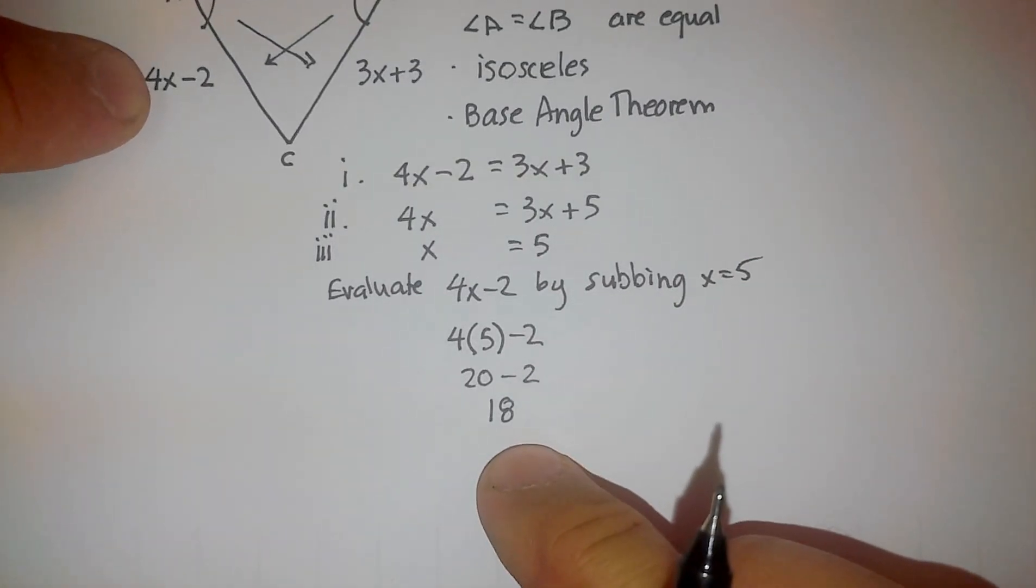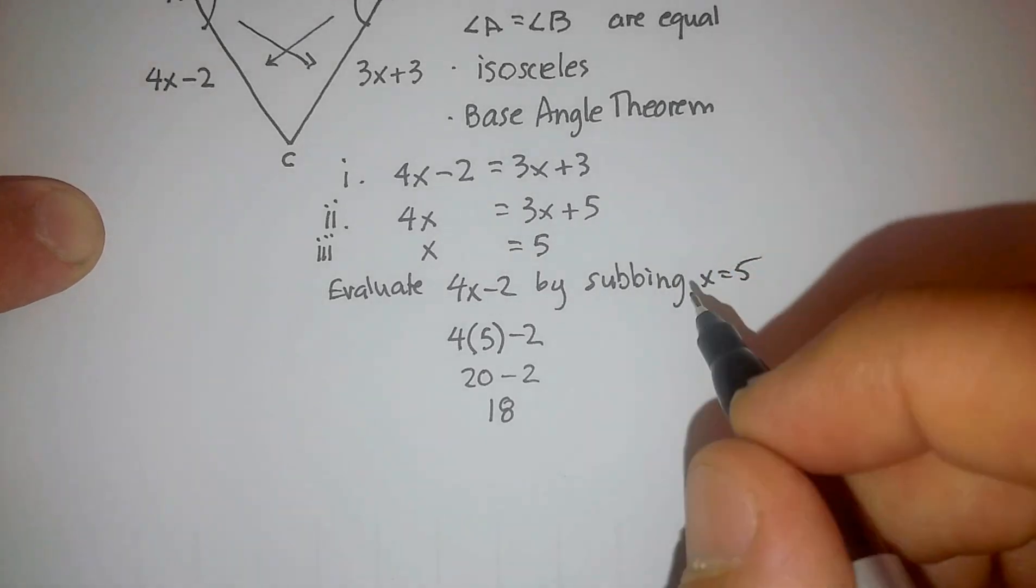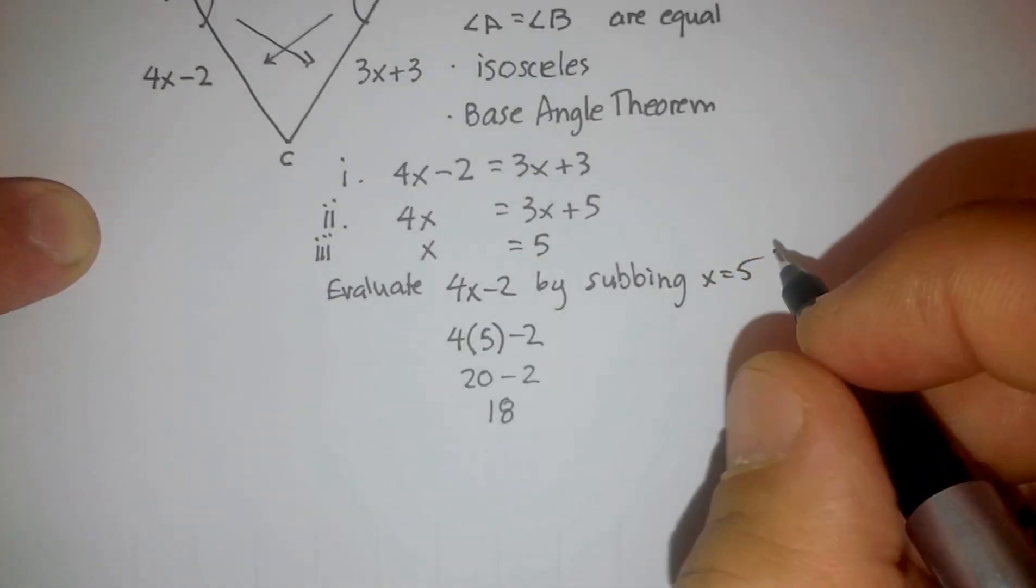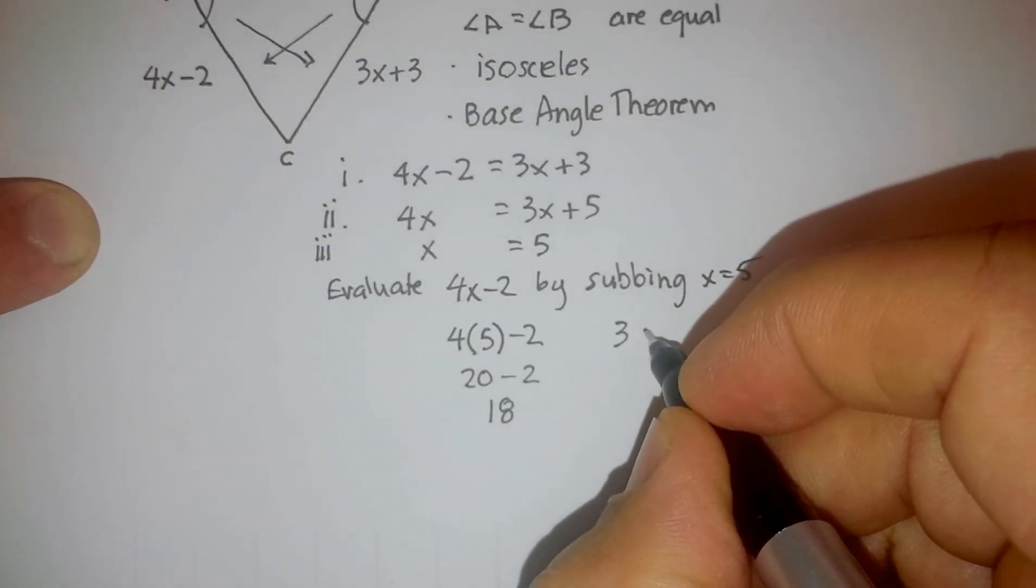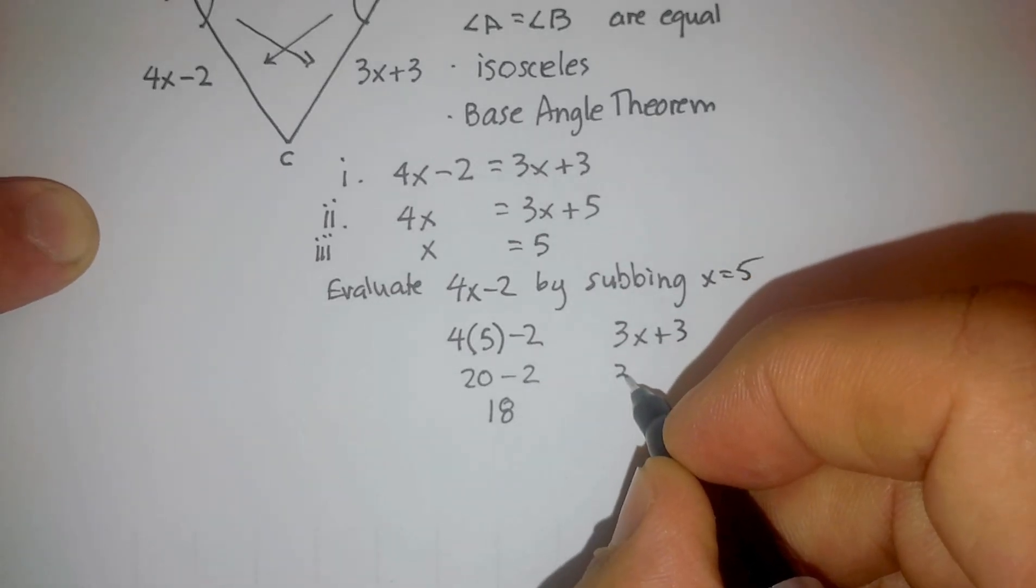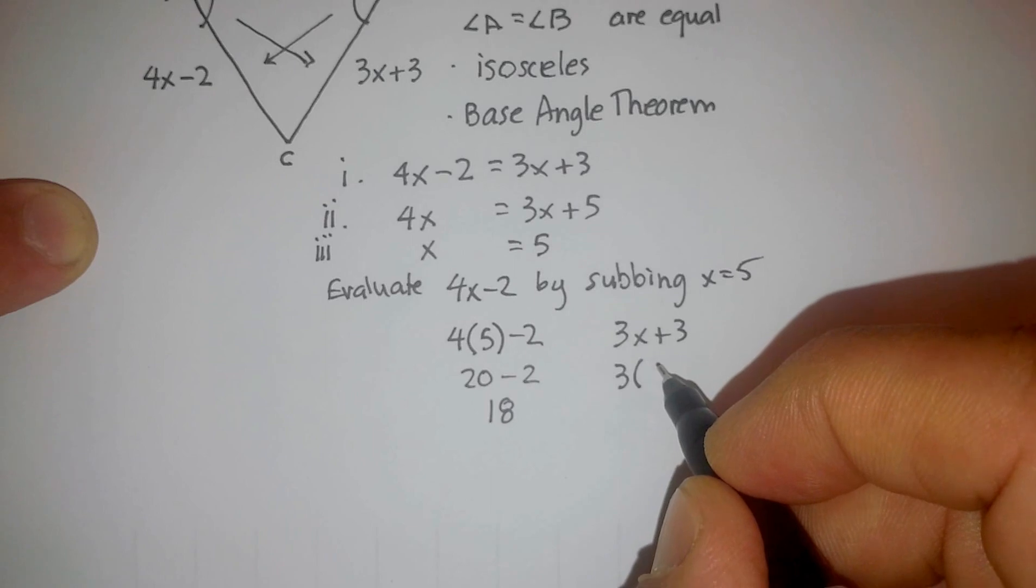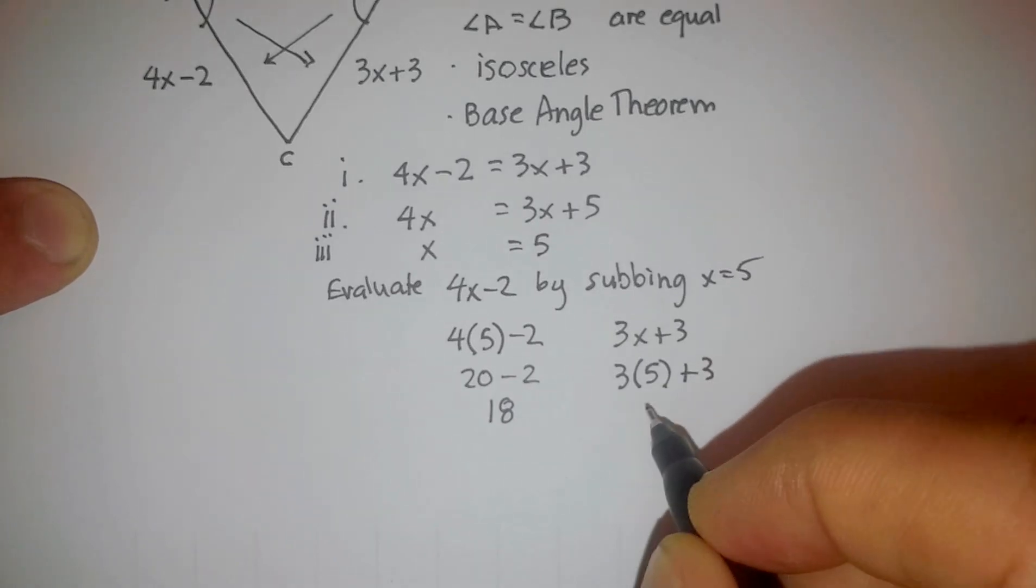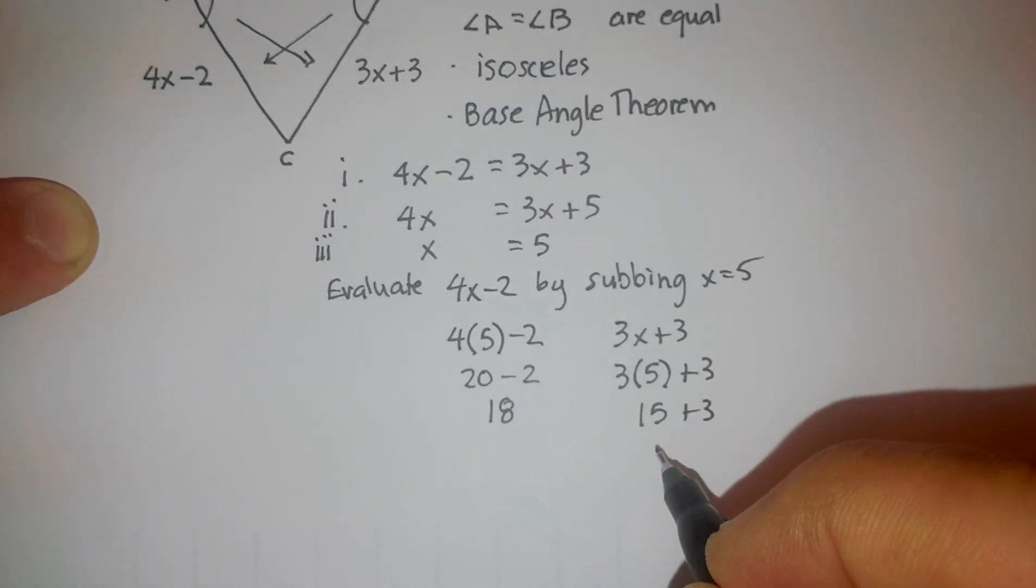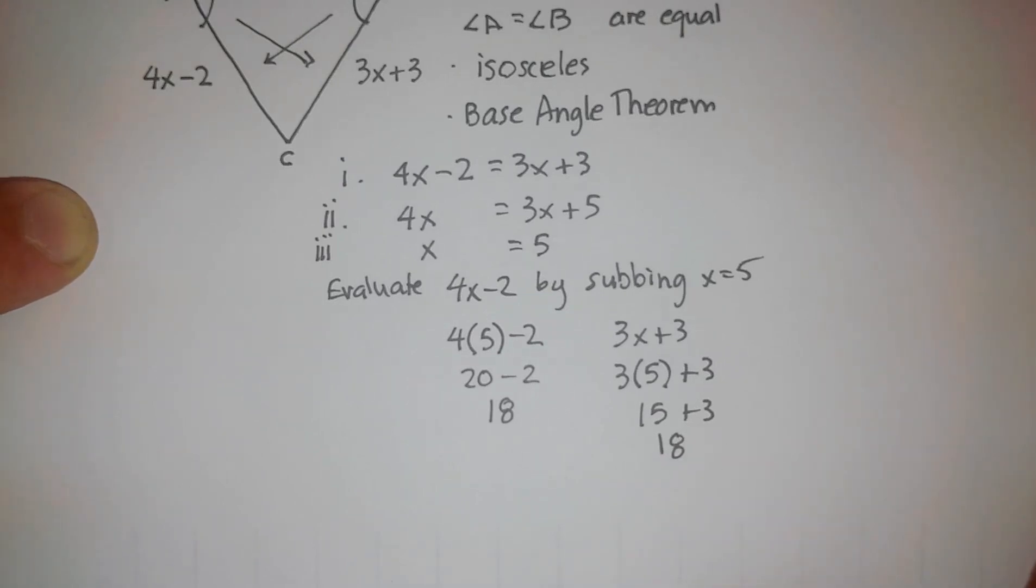So if this side's 18, let's see if this side works out to be 18. So we're going to evaluate the same thing, but we're going to evaluate 3x plus 3. Remember whenever you substitute a number, go ahead and put it in parentheses. So I'm going to do that. That's going to give me 15 plus 3, and sure enough, I get 18 as well.